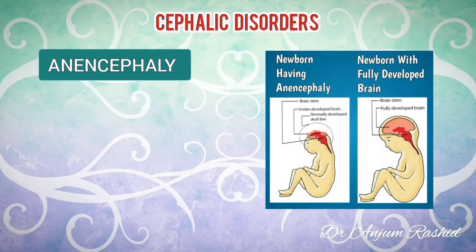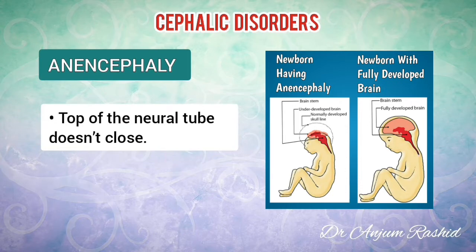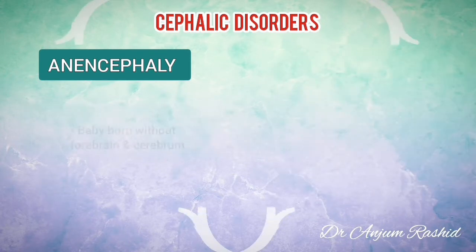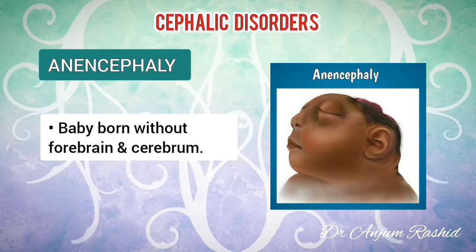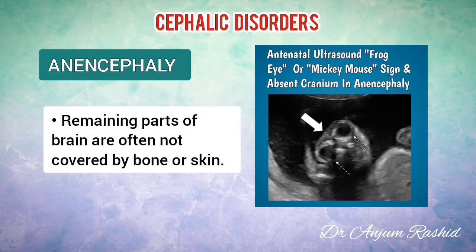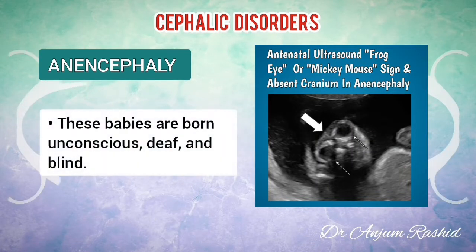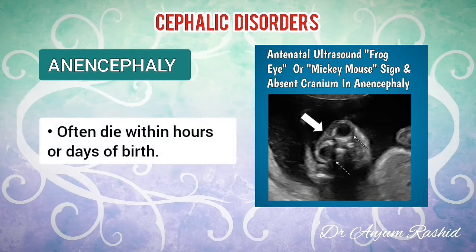The first condition is anencephaly. This condition occurs when the top of the neural tube doesn't close as the baby develops during pregnancy. This often results in a baby being born without a forebrain and cerebrum. The forebrain is the front part of the brain and the cerebrum is the thinking and coordinating part of the brain. The remaining parts of the brain are often not covered by bone or skin. These babies are born unconscious, deaf and blind, and often die within hours or days of birth.